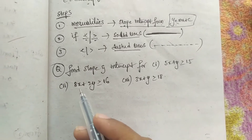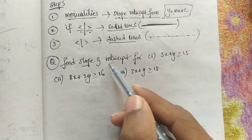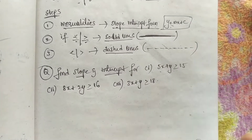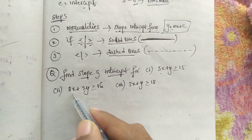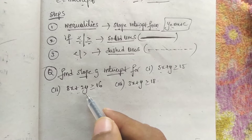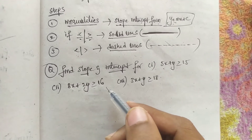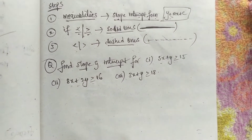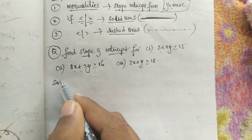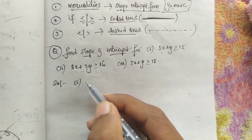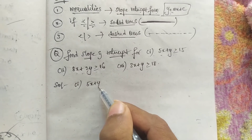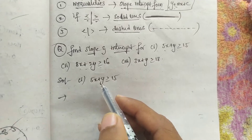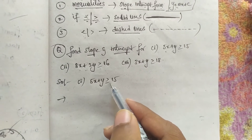The given questions are: find the slope and intercept for — first: 5x plus y greater than or equal to 15; second: 8x plus 2y greater than or equal to 16; third: 3x plus y greater than or equal to 18. Let us start with the first problem: 5x plus y greater than or equal to 15.